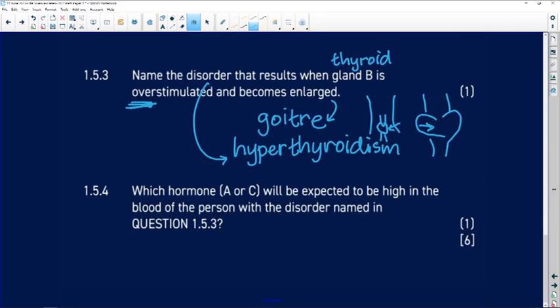Which hormone, A or C, will be expected to be high in the blood? It's going to be thyroid stimulating hormone. That brings us to the end of question 1.5.